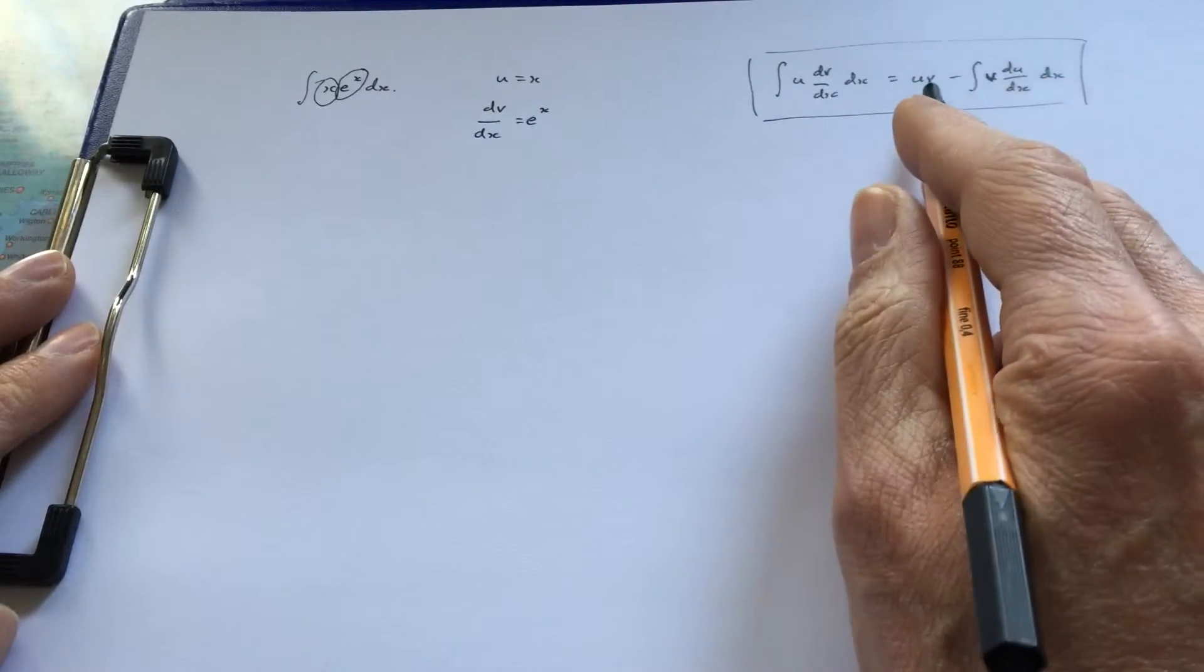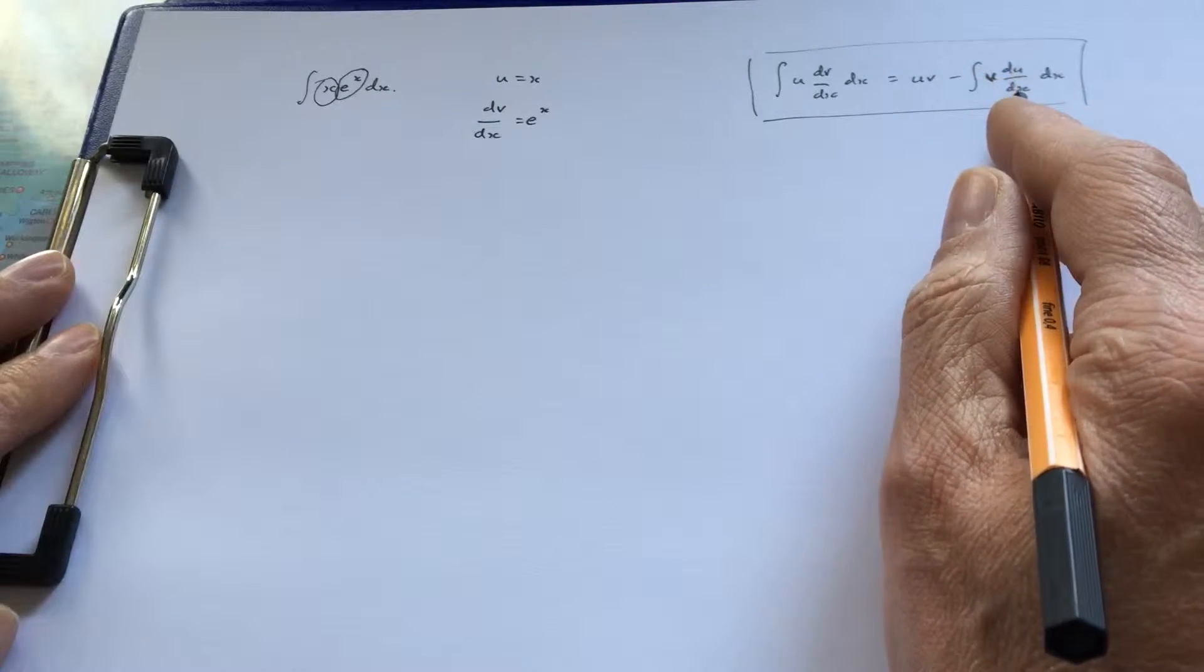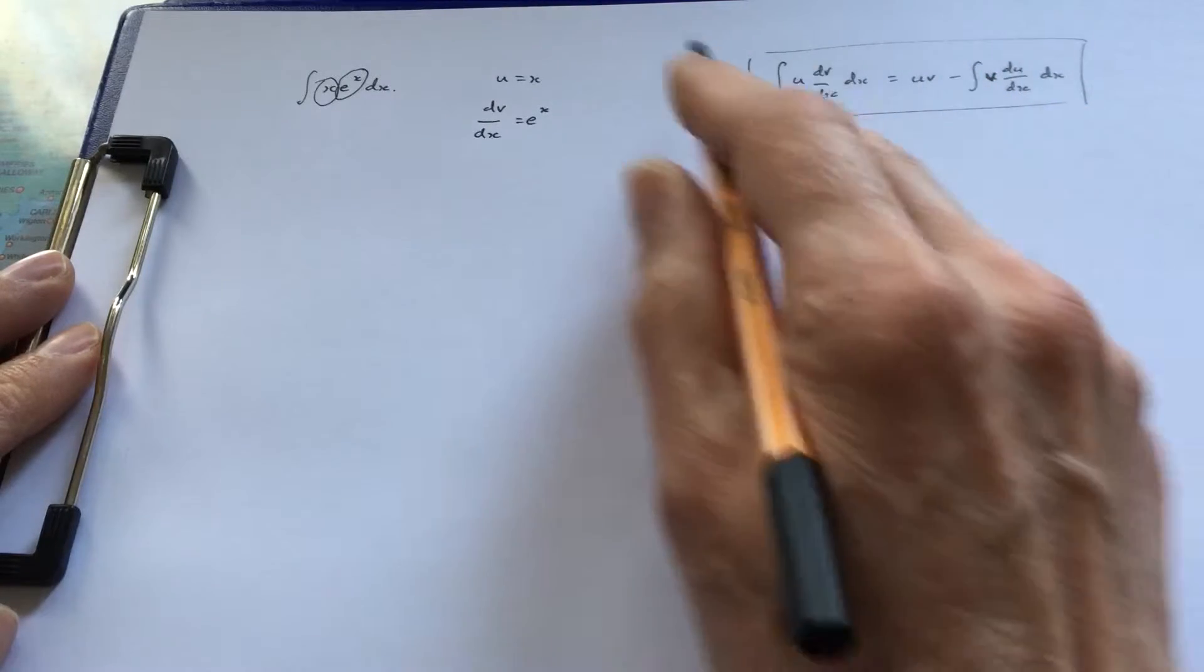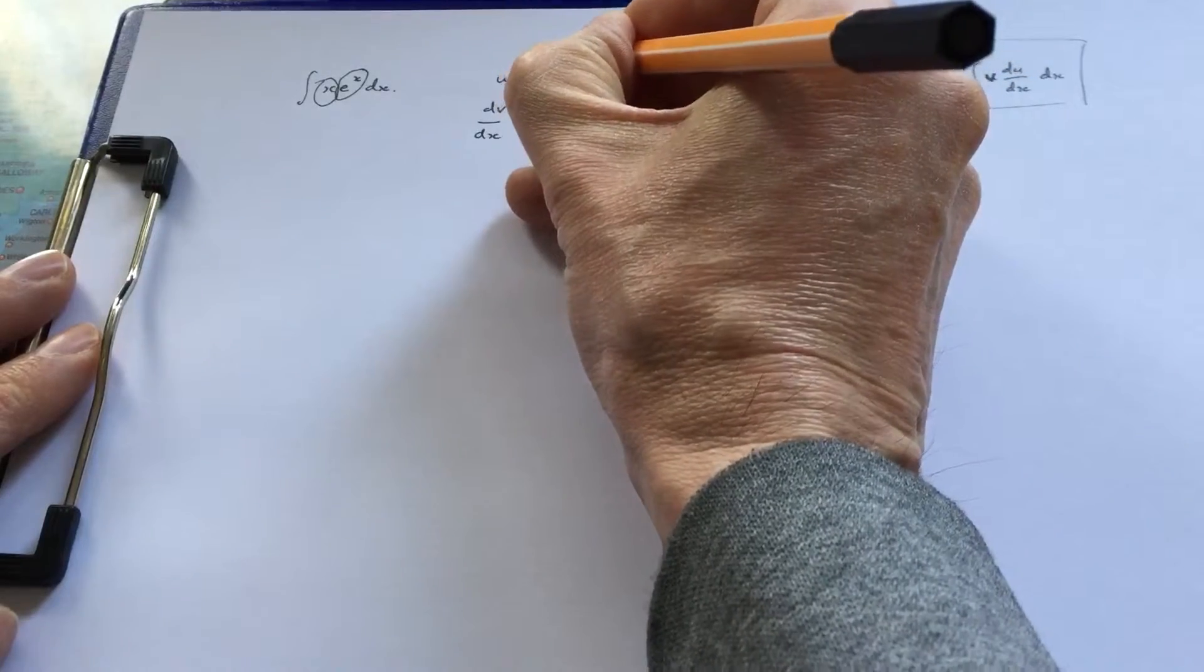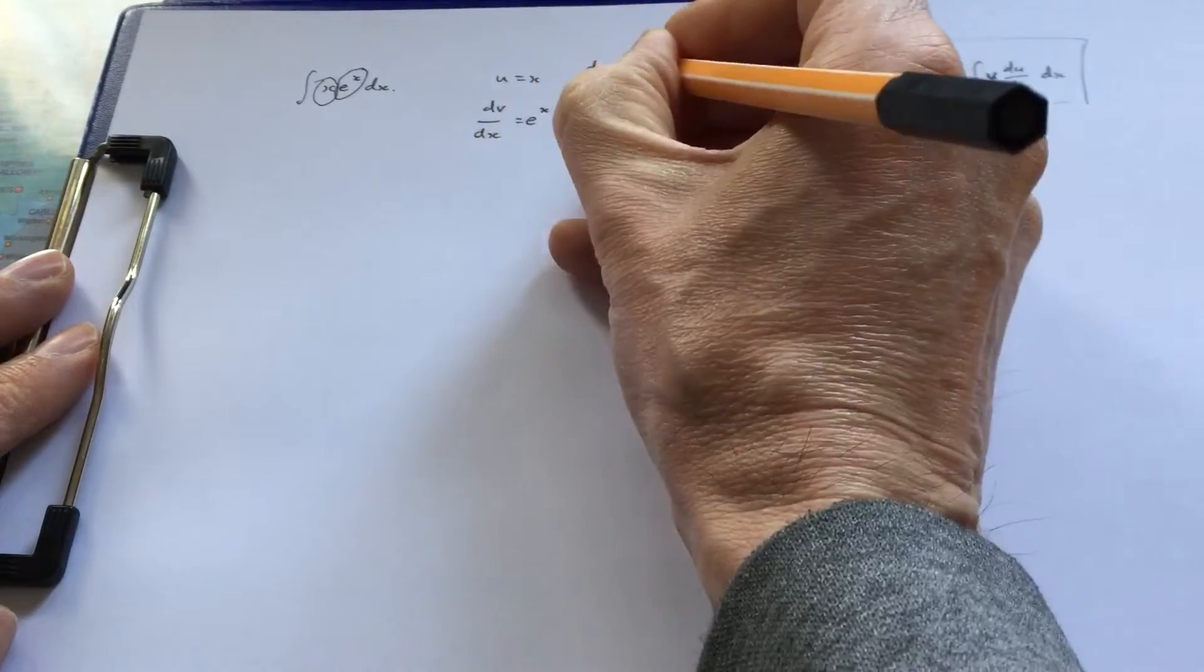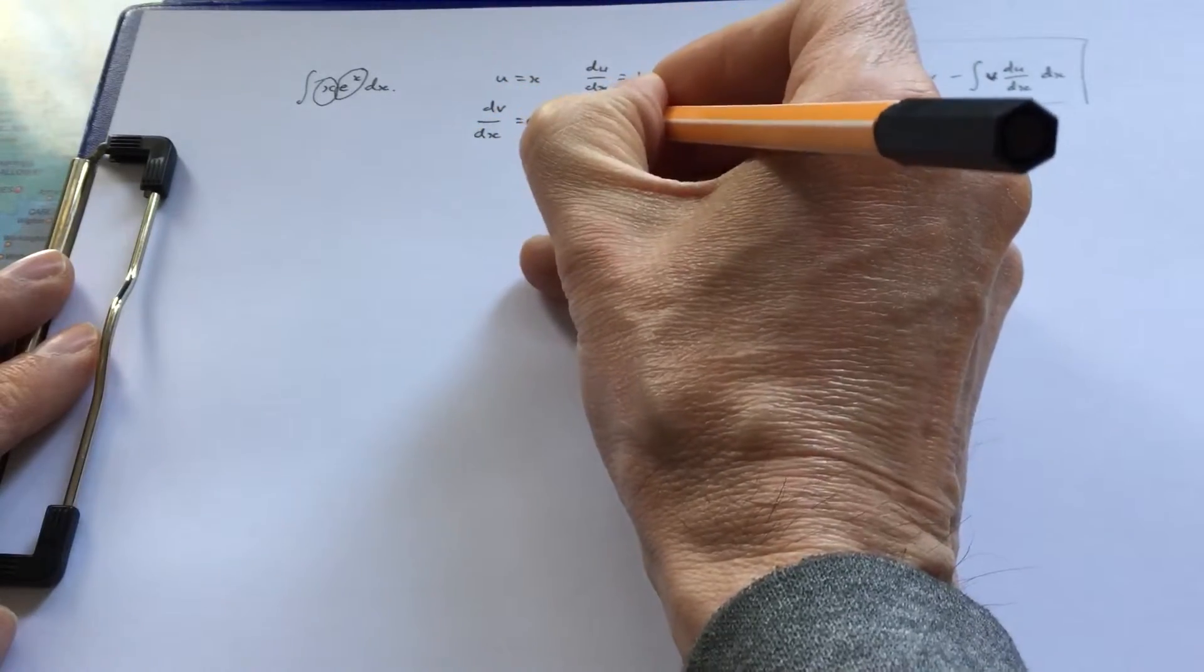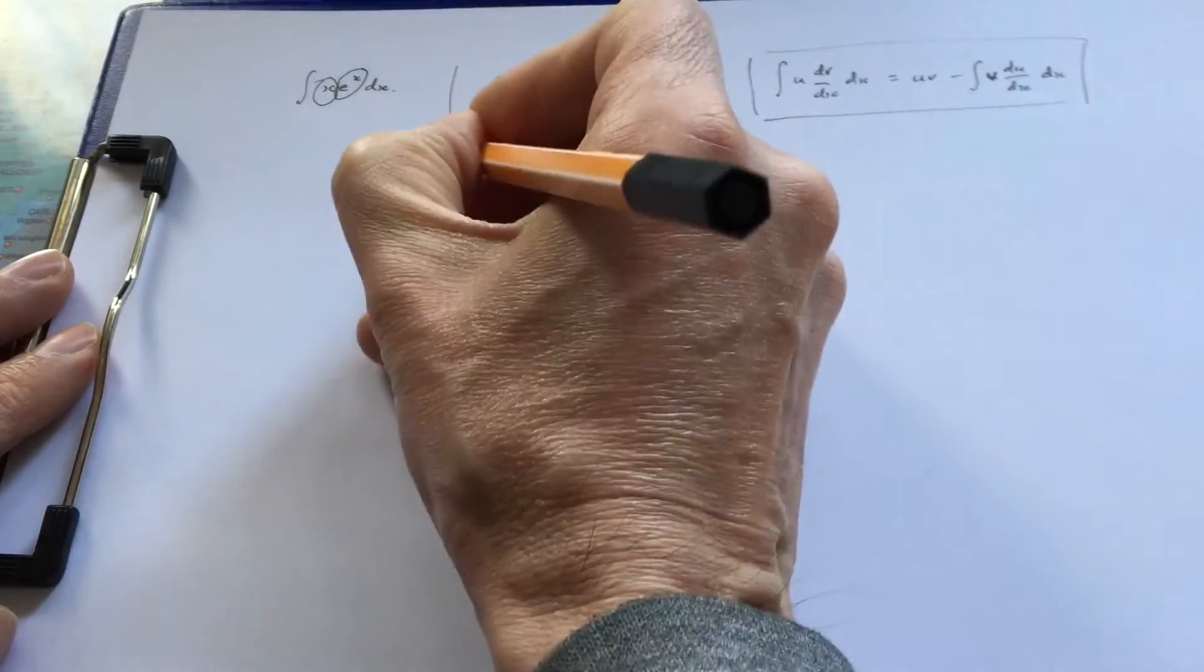Looking at the formula, we need to know v and du/dx. Let's work those out. du/dx is the differential of x, which is 1, and v is the integral of e^x, which is just e^x.